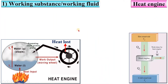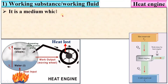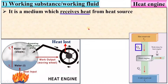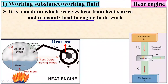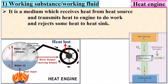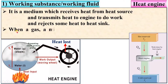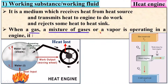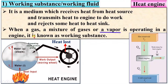Let's start from working substance. It is a medium which receives heat from the heat source and transmits heat to the engine to do work, and rejects some heat to the heat sink. When a gas, or it can be a mixture of gases, or it can be a vapor, is operating in an engine, it is known as working substance.